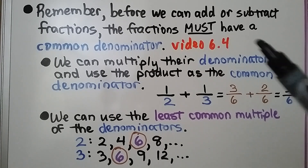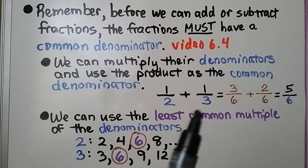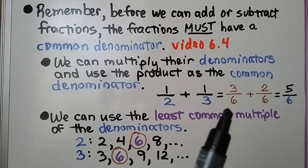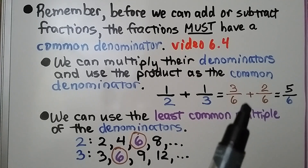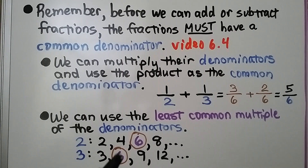Any time you see these red letters showing a video, that means it's linked in the description. We can multiply their denominators and use the product as the common denominator. If we have 1 half plus 1 third, we can multiply 2 times 3 and use 6 as the common denominator. We would get 3/6 plus 2/6 equals 5/6. We can also use the least common multiple of the denominators — 2 and 3 have a least common multiple of 6, so we can use that as the common denominator.